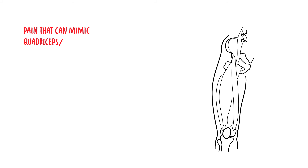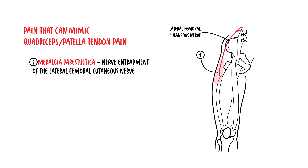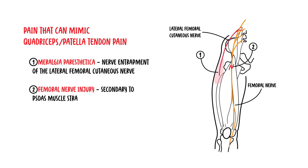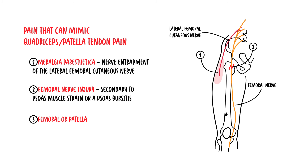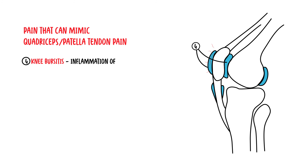Pain that can mimic quadriceps or patellar tendon pain includes meralgia paresthetica, where you have nerve entrapment of the lateral femoral cutaneous nerve — this could be from things such as ascites. Femoral nerve injury, where the nerve that innervates the quadriceps muscle gets compressed, causing pain around the thigh. Femoral or patella fracture. Knee bursitis, which is inflammation of the bursa, which are fluid-filled sacs around the knee.